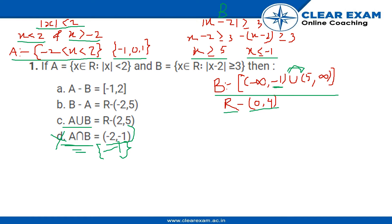Now let's check A union B. In case of B, we have all real numbers minus those from 0 to 4, and in A we have minus 1, 0, and 1. So in A union B, we'll have all real numbers minus those from 2 to 4, because now minus 1, 0, and 1 are included in the union. So this is the range for A union B, so C is also wrong.